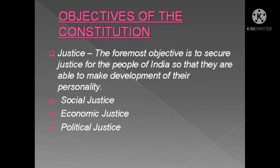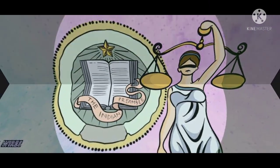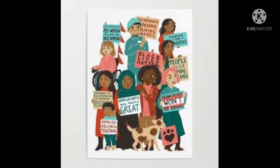Let us study the objectives of the constitution. Justice: The constitution of India states that all Indian citizens are equal in the eyes of law. Justice is ensured in three forms: social, economic and political. Social justice ensures that people are not discriminated on the basis of their birth, caste, gender, colour, race, status or religion.